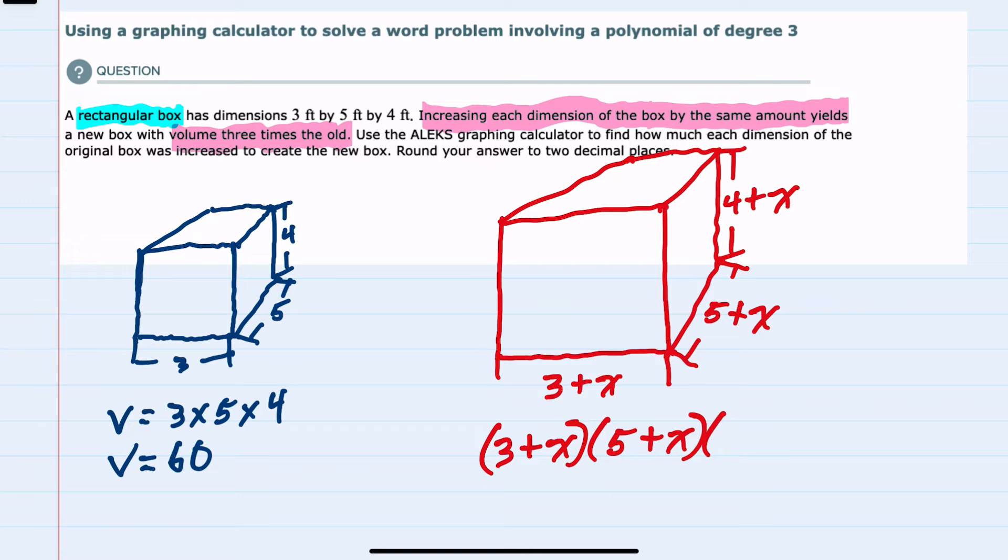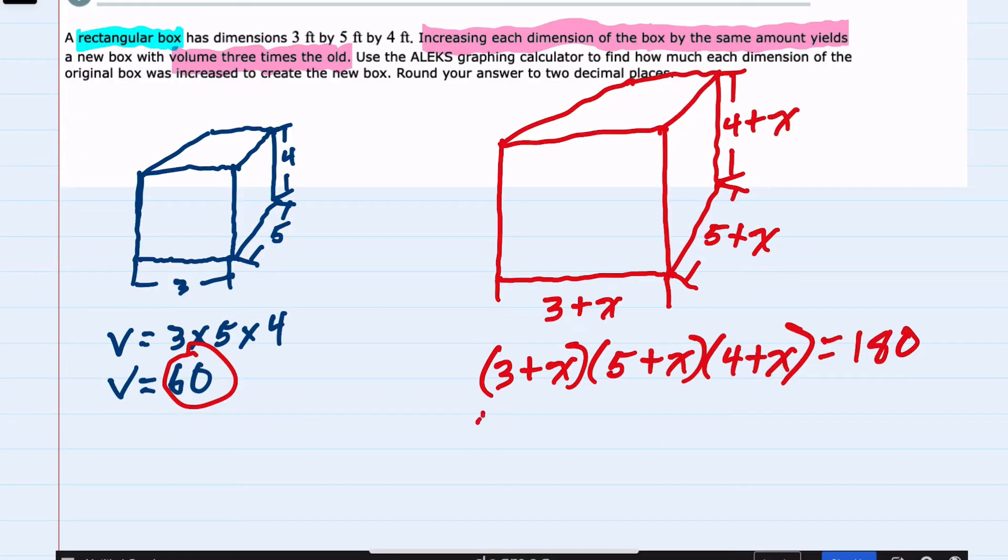We're told that this will give us a volume that is 3 times the original volume. So 3 times our original volume of 60 would be 180. Our method for solving this for X would be to set this equal to 0.